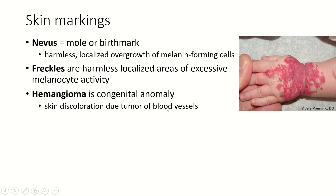A hemangioma, sometimes called a strawberry birthmark, is a discoloration of the skin as a result of a tumor of blood vessels. These are usually birth defects. During fetal development, the blood vessels in a part of the body just overdevelop — a tumor being an overgrowth of cells. You get an overgrowth of blood vessels, and as a result there's excess blood flow and a red color at the skin.